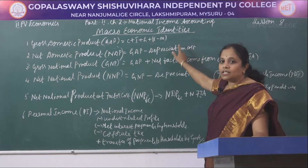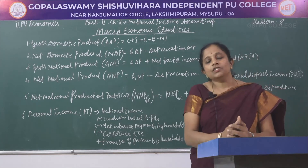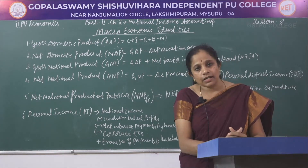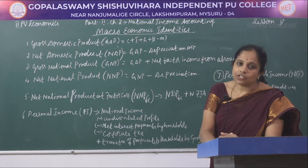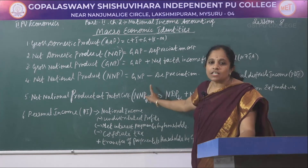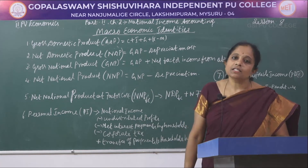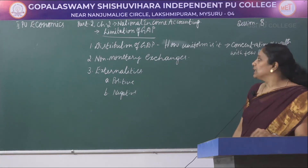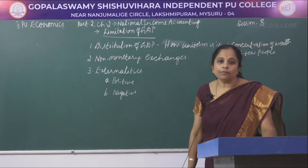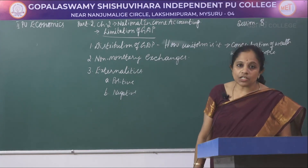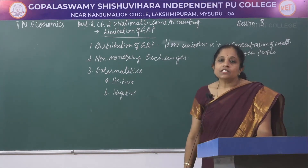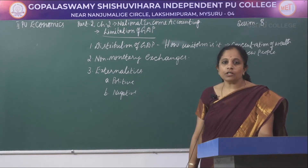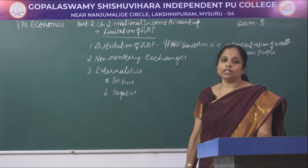All these macroeconomic identities are very important for calculating GDP, as they involve their own additions and subtractions. From an examination perspective, these identities are worth 6 marks and are frequently repeated in question papers. We now move to the last topic: the limitations of GDP — what are the limitations in measuring GDP and assessing the national welfare of a country? GDP is the aggregate value of goods and services produced in a year.